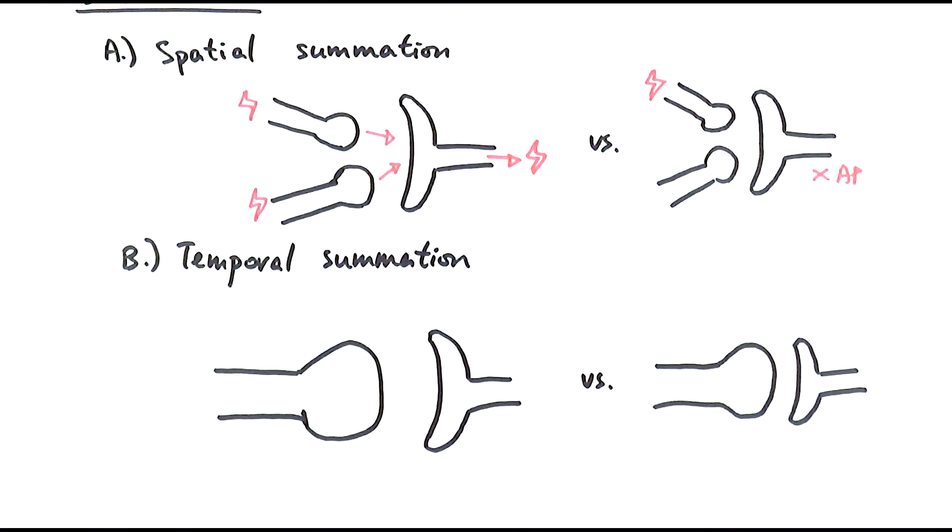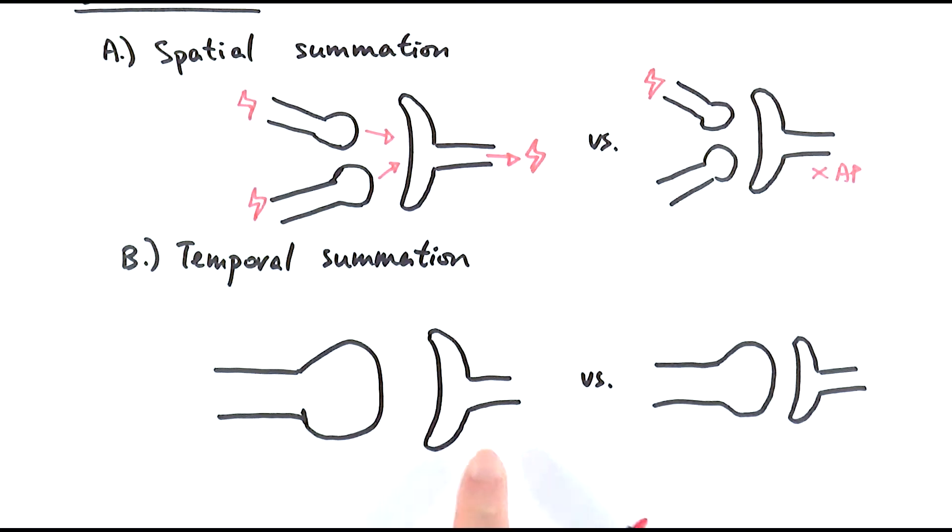On the other hand, we've got temporal summation, which is, as you can see, one presynaptic neuron and one postsynaptic neuron. But in this case, let's talk about the frequency of the action potential received at the presynaptic neuron.